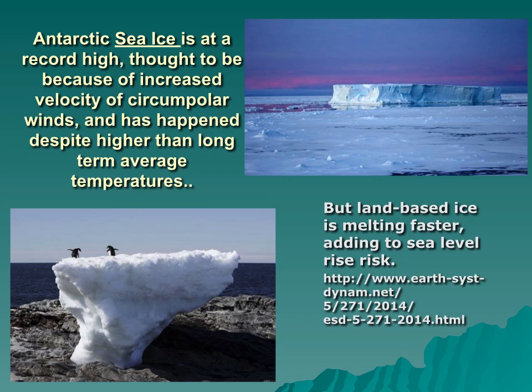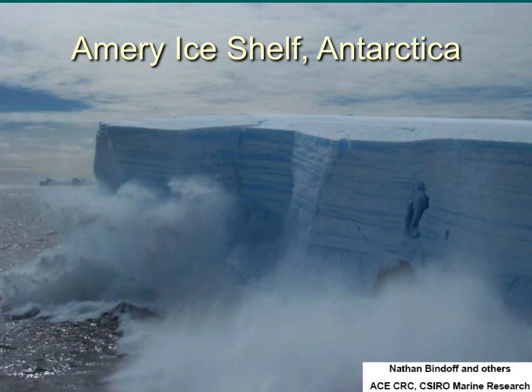If all the ice in Antarctica were to melt, global sea levels would rise about 60 metres or 200 feet. The photo above shows one of the ice shelves in Antarctica, where the ice on land slowly slides down into the ocean, and there is evidence that the rate of this is accelerating.